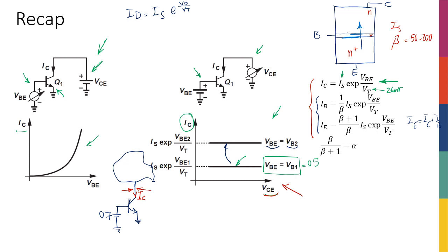Whatever is inside the box — which is my transistor plus a voltage source setting the base voltage — can be called a current source, because by definition a current source is a component that delivers the same current regardless of what voltage appears at its terminal or what is connected to it. That is exactly what this transistor is doing: whatever is connected to the collector node, the transistor delivers the same IC. Drawing the box differently, I have a voltage source connected to a box whose output current is independent of the load connected to it.